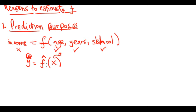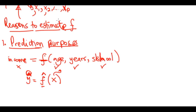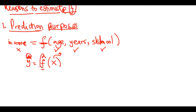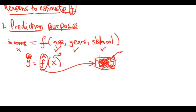We can predict y using our estimated f — that blue curve from the previous video. In this situation, f is treated as a black box. A black box is something we cannot see inside. We do not know what is inside it, but if we put our inputs in, it will give us an estimate of y. We do not care how it's doing that, because all we care about is the prediction for y.